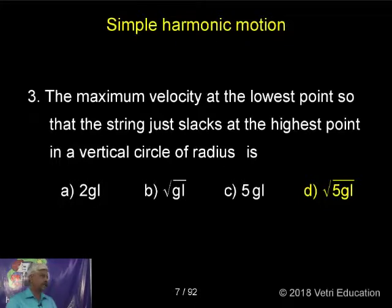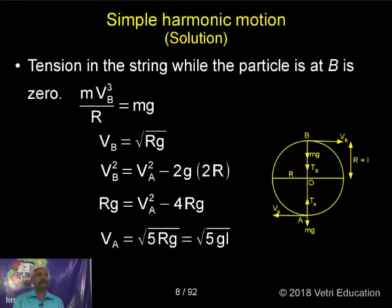At the highest position, the tension is zero. Therefore, centripetal force mv²/R at B equals mg. Therefore, VB is equal to root of Rg. Mass cancels.